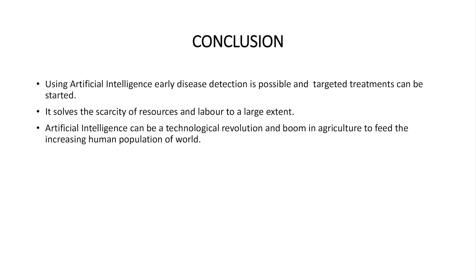Conclusions are using artificial intelligence, early detection of diseases is possible and targeted treatments can be started. It solves the scarcity of resources and labor to a large extent. Adoption of artificial intelligence is quite useful in the agriculture field. For example, weed eliminators can be made out of the application of artificial intelligence. Artificial intelligence can be a technological revolution and a boom in agriculture to feed the increasing human population of the world.